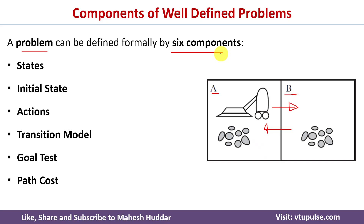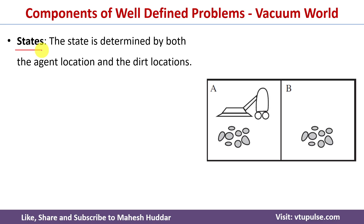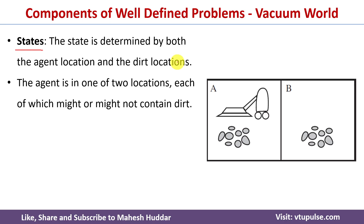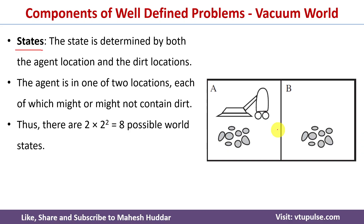Now we will define this problem formally with the help of six components. The first component is states. The state is determined by two things: the location in which the AI-based vacuum cleaner is present — either location A or location B — and the status of the locations, whether dirty or clean. There are two locations, and each can be in two states (dirty or clean), so 2 multiplied by 2 raised to the power of 2 gives us eight total states.